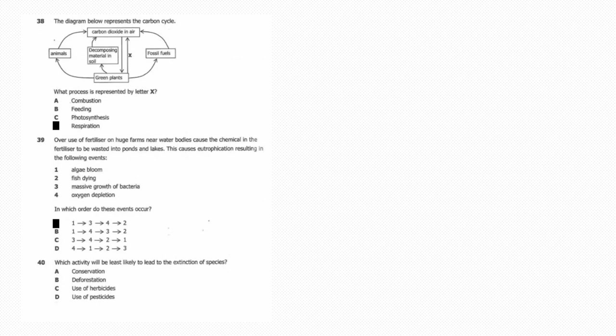Finally, number 40: Which activity will be least likely to lead to the extinction of species? Answer is A, conservation. All right, so that's it for this video for revising Biology Paper 1, 2020 GCE. If you found it valuable, hit the like button and subscribe to the channel if you haven't already. Thanks for watching. I'll catch you guys in the next one.